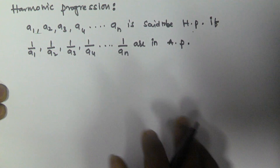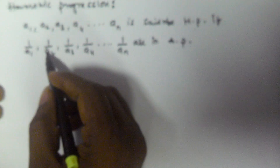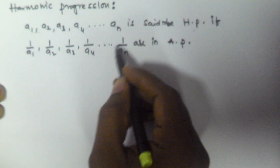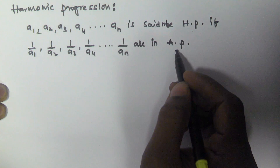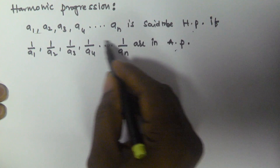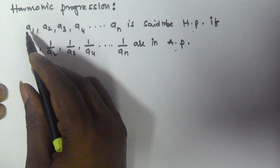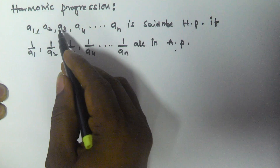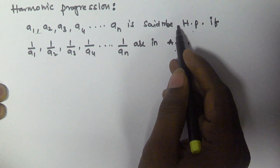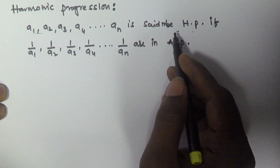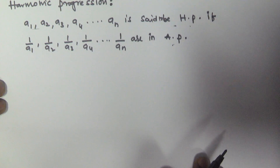The converse is also true: if the numbers 1/a1, 1/a2, 1/a3, 1/a4, and so on 1/an are in arithmetic progression, then their reciprocals a1, a2, a3, a4, and so on an are in harmonic progression.